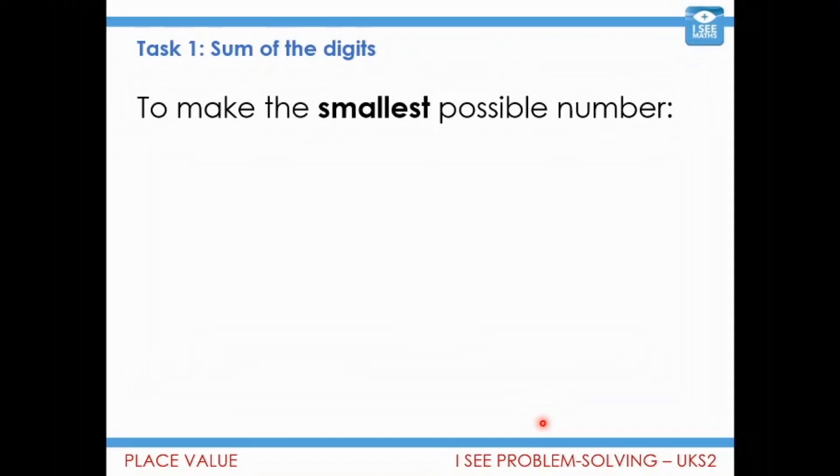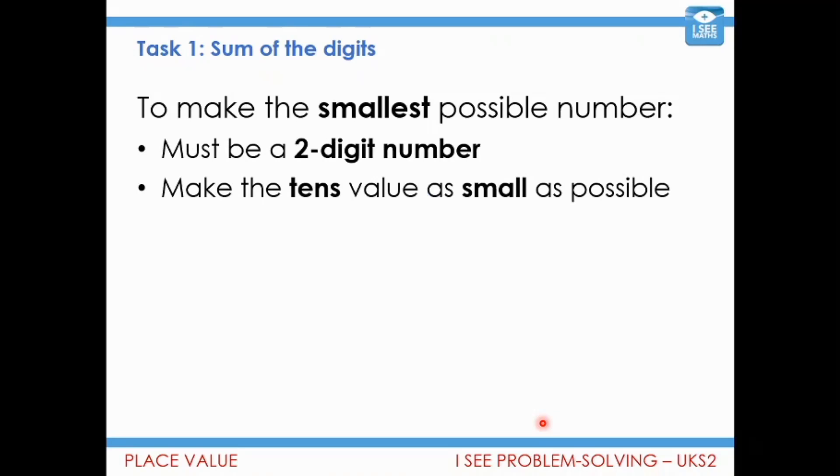Now, only have a look at this part when you've had a really good go at that task. I wonder how you've got on. So to make the smallest possible number, how can we go about doing that? Well, it's got to be a two-digit number. And I want the 10's value to be as small as it possibly can be. That's the kind of key. So there, 15. Because where I have sum of the digits of 6, to make the 10's value as small as possible, I can make it a 1. And then that makes the 1's value a 5.